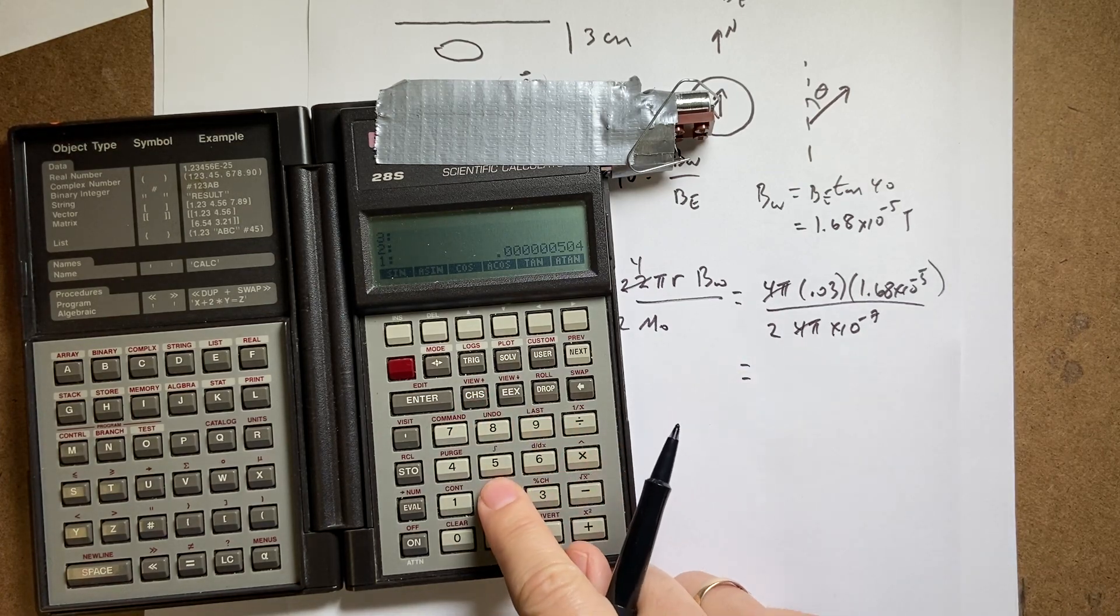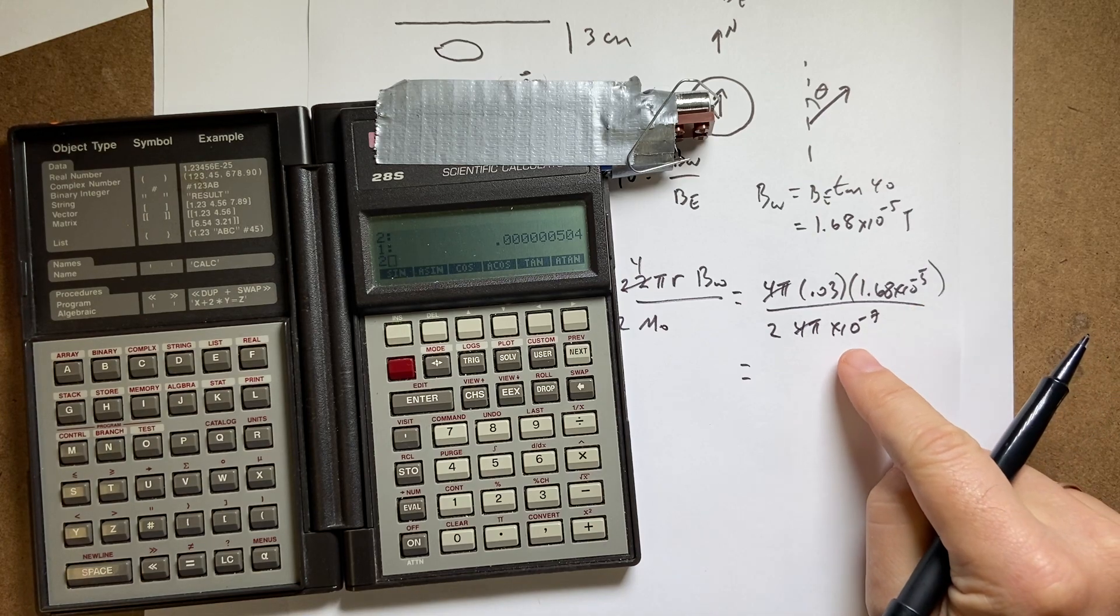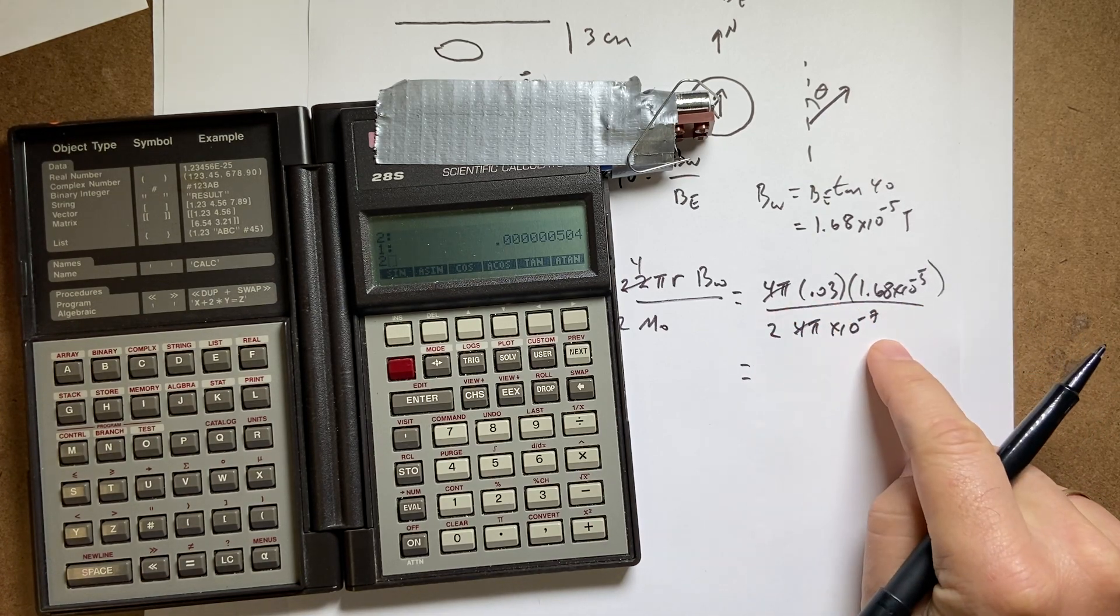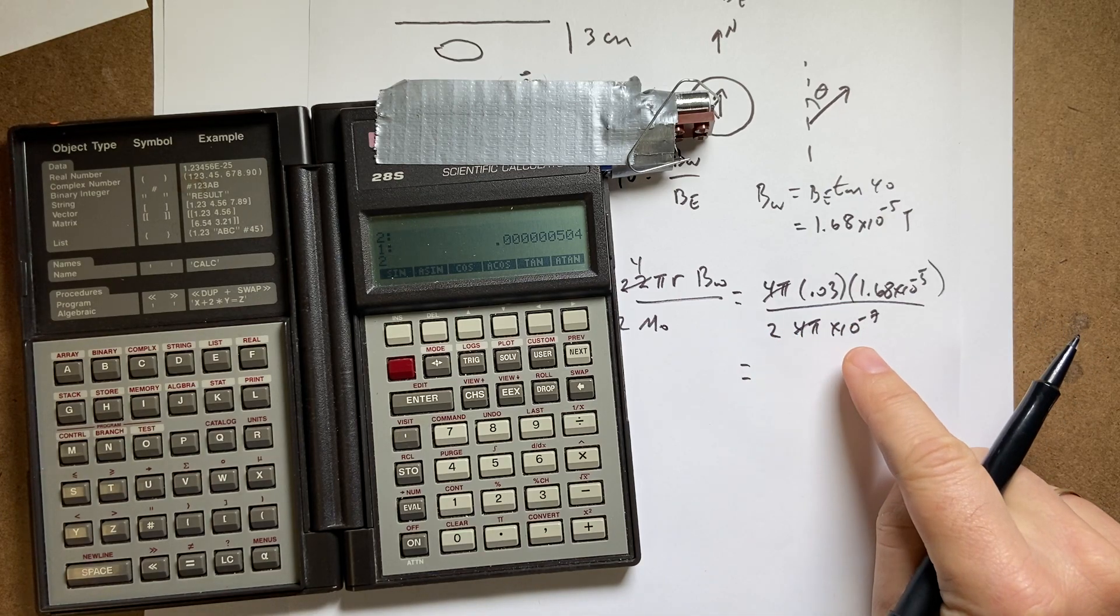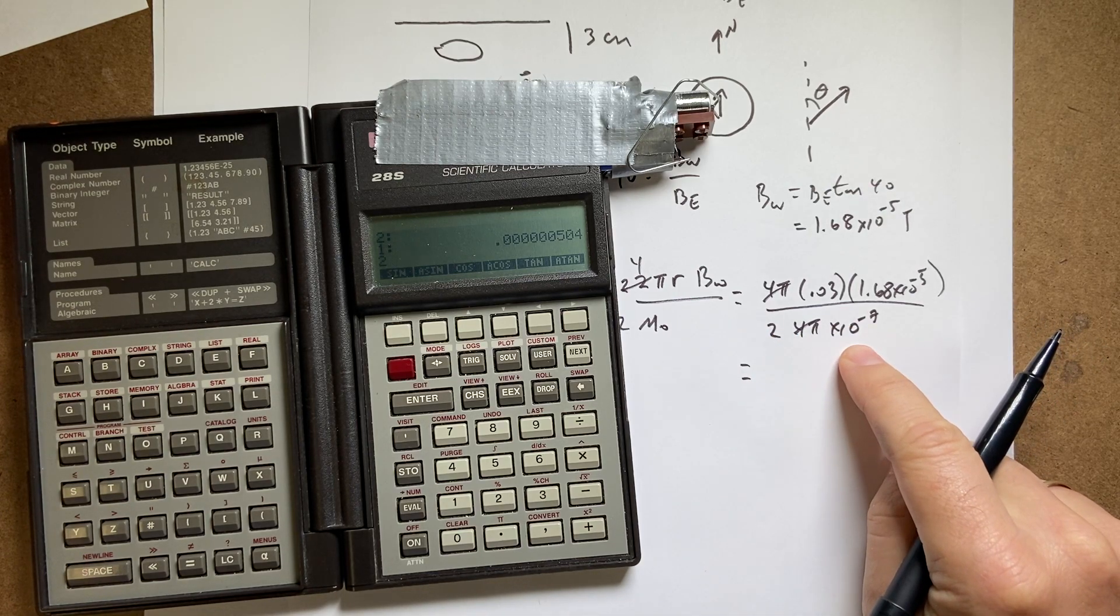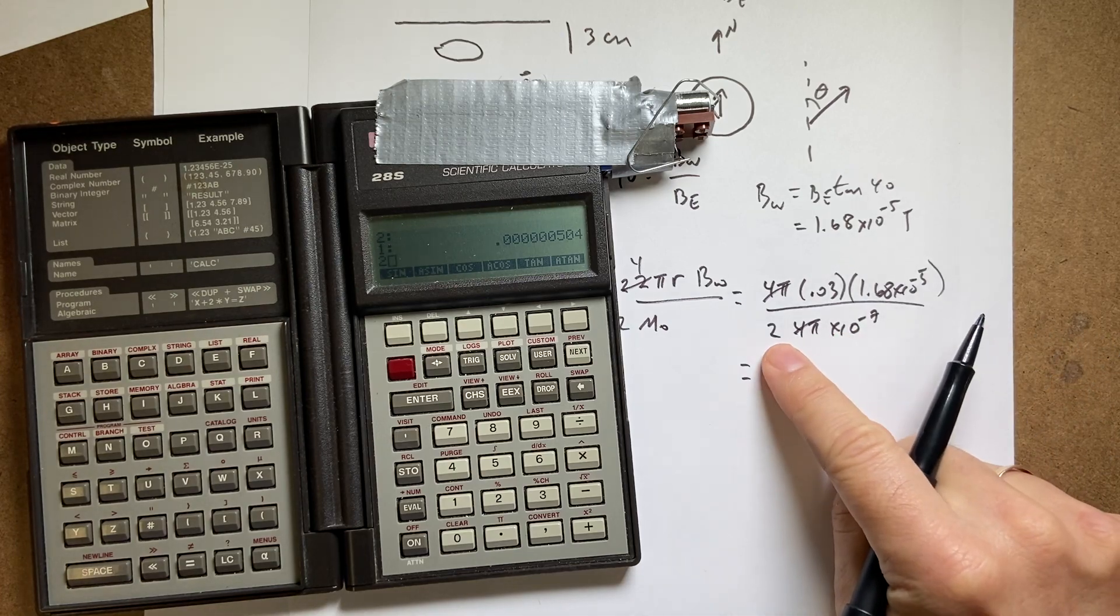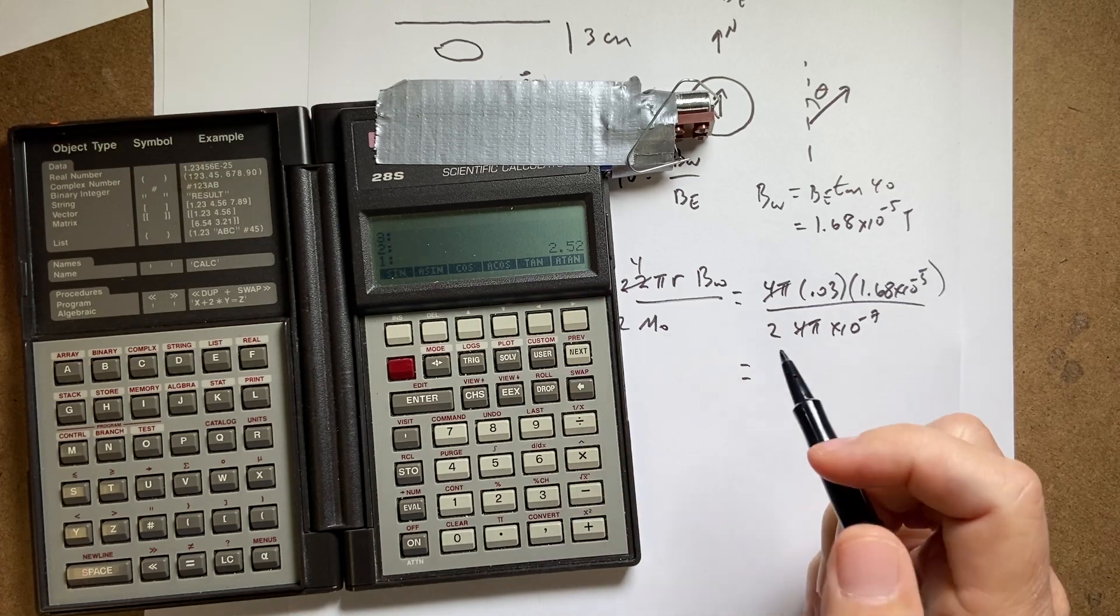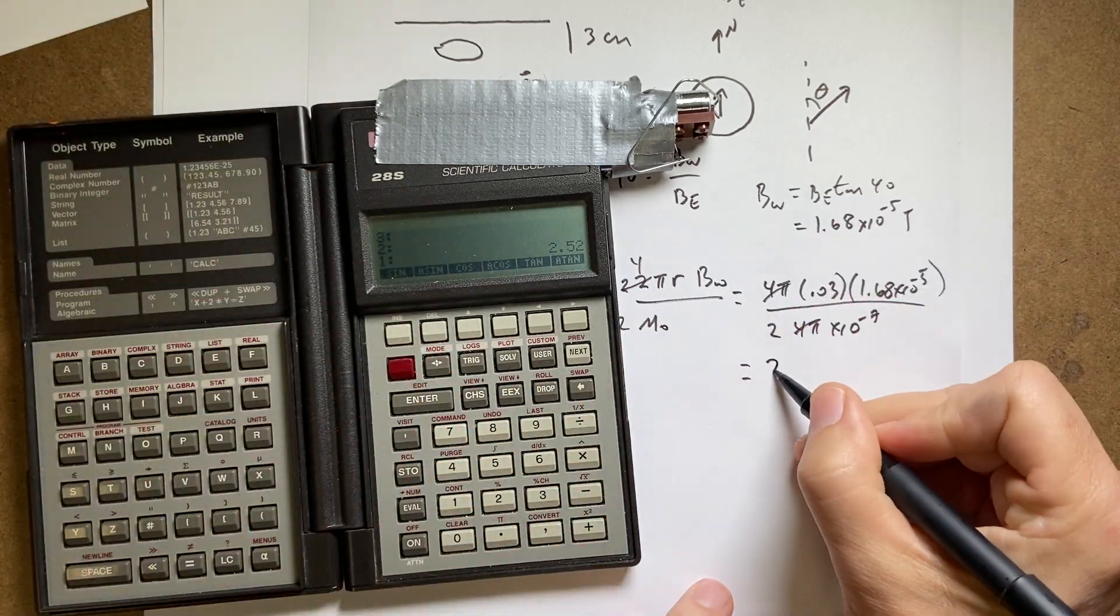Now I need to divide by 2. Here's where you really need to be careful with your order of operations. Okay. If you're going to enter scientific notation the long way, be careful. Don't divide by 2 and then multiply by this, because that would actually be dividing by that. I'm going to enter this as 2 times 10 to the negative 7th. So 2, 7 negative, divided by. And I get 2.52 amps.